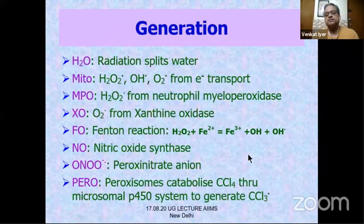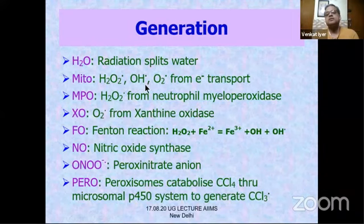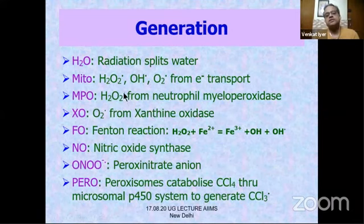Free radicals are generated by numerous methods. Radiation can split water to generate free radicals. Mitochondria generate H₂O₂, hydroxyl radical (OH•), and superoxide from the electron transport chain. Myeloperoxidase is a neutrophil enzyme that generates hydrogen peroxide. Xanthine oxidase can generate another free radical.